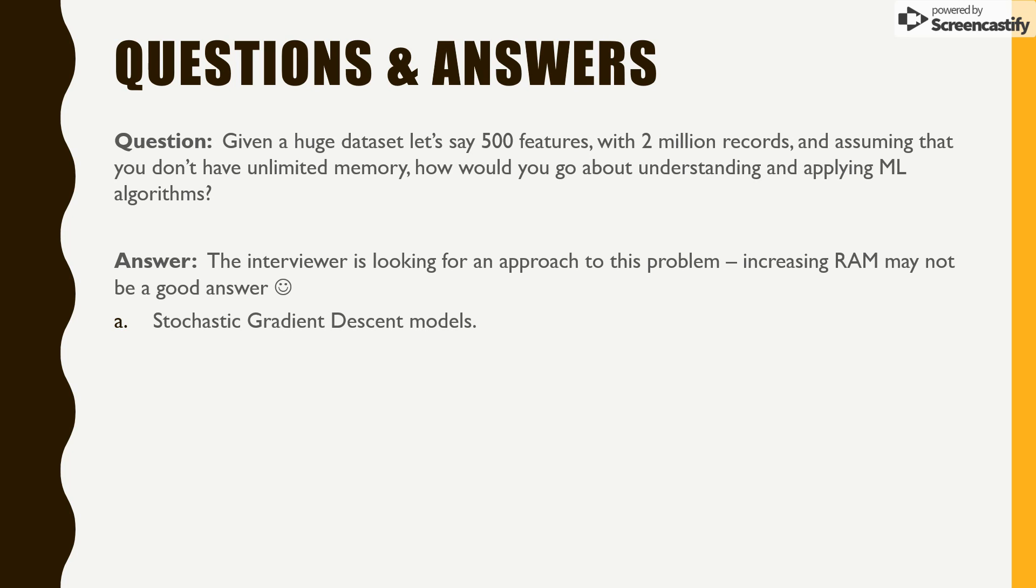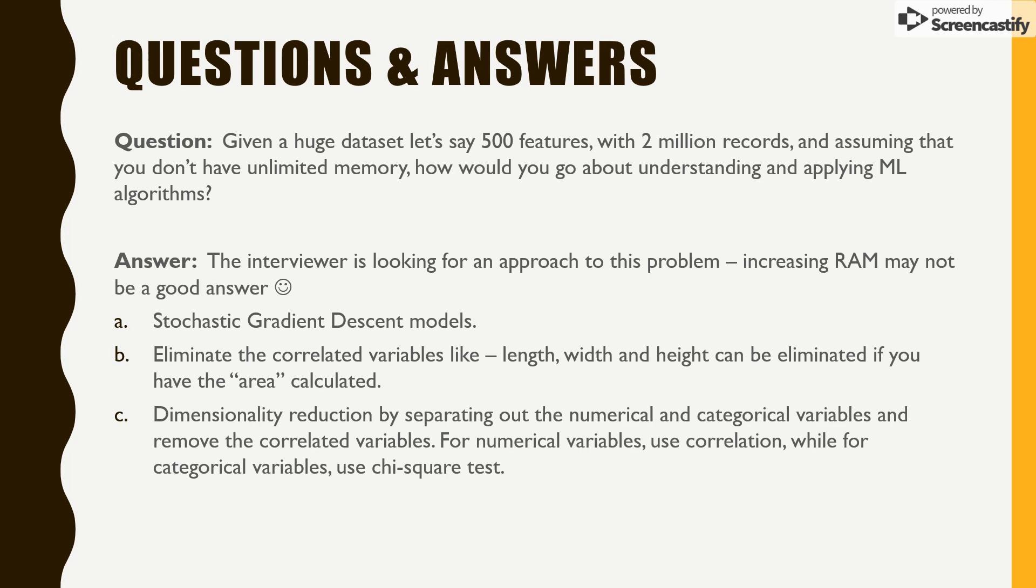Now, stochastic gradient descent models, the first one, because they predict with one record or maybe a set of records at a time. It doesn't have to wait for 2 million records to be processed before it can start applying hypotheses. And that is where the stochastic gradient model could be a good starting point. Now, again, eliminate correlated variables. As I mentioned in the previous video, dimensionality reduction in order to decrease the number of features.